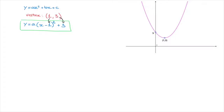Rewriting this parabola's equation using the coordinates of its vertex is known as writing the parabola in its vertex form. Doing this means that all we have to find is the value of the coefficient a, and to find a, all we need are the coordinates of one other point through which the parabola passes.